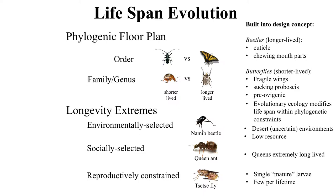Within these phylogenetic groups you can have shorter-lived and longer-lived species, where evolutionary ecology modifies lifespan within phylogenetic constraints. Species that go to the desert have different lifespan adaptations than those in the tropics. This framework for lifespan extremes has held up for about 20 years since I developed it.